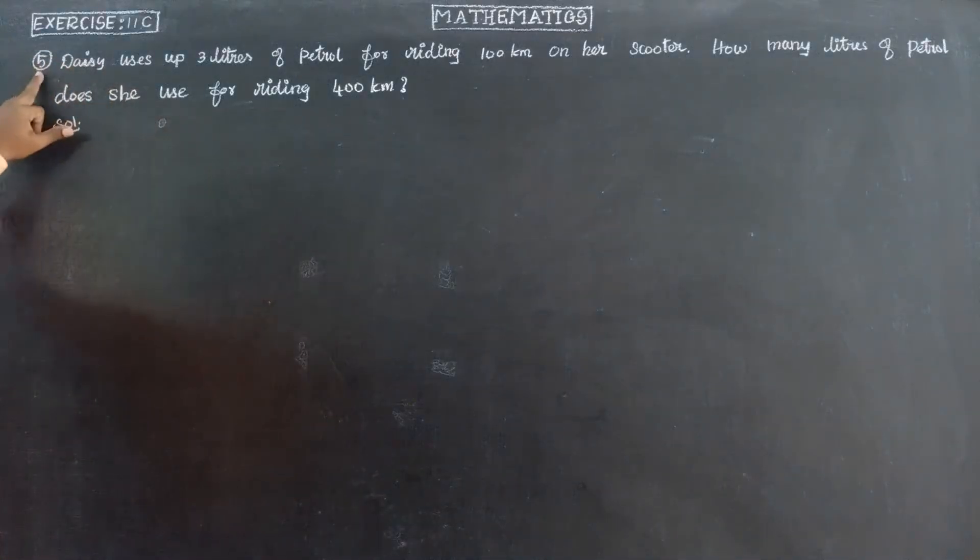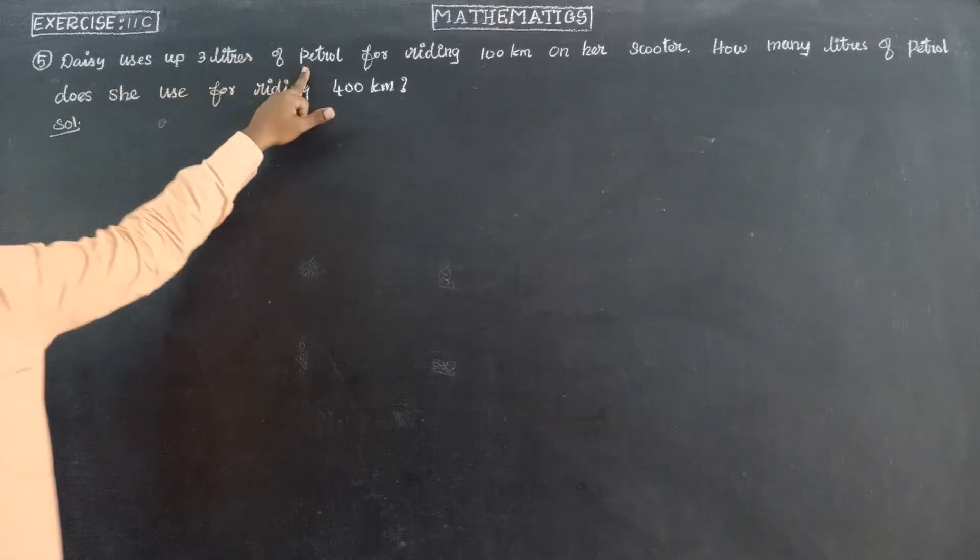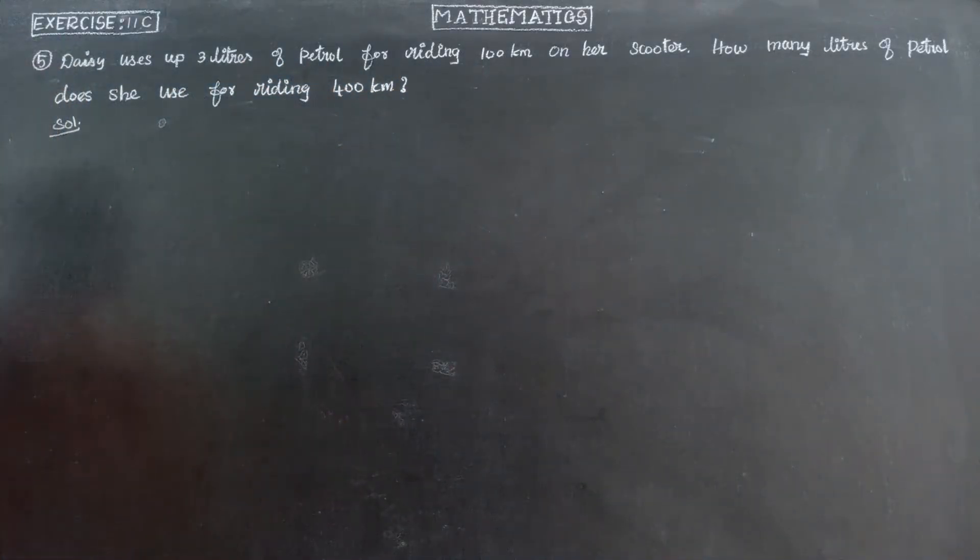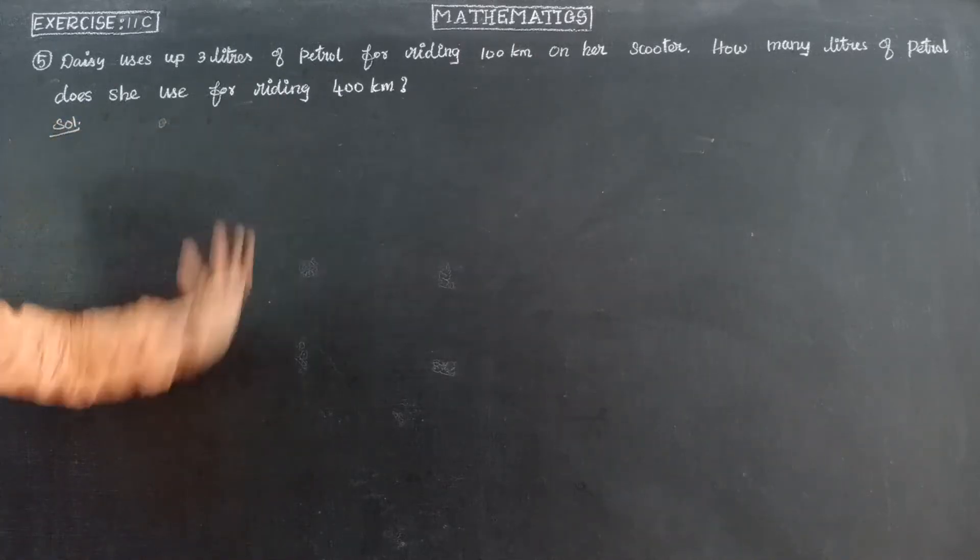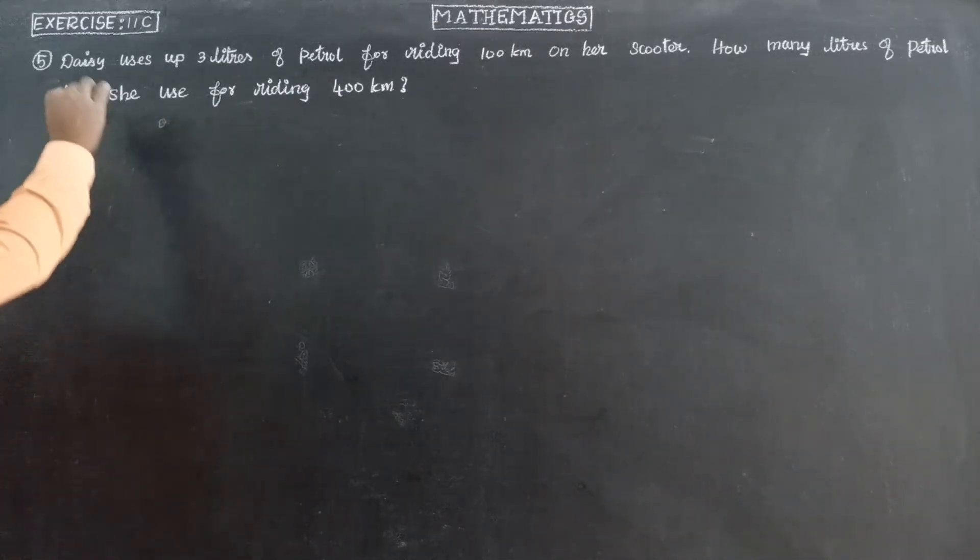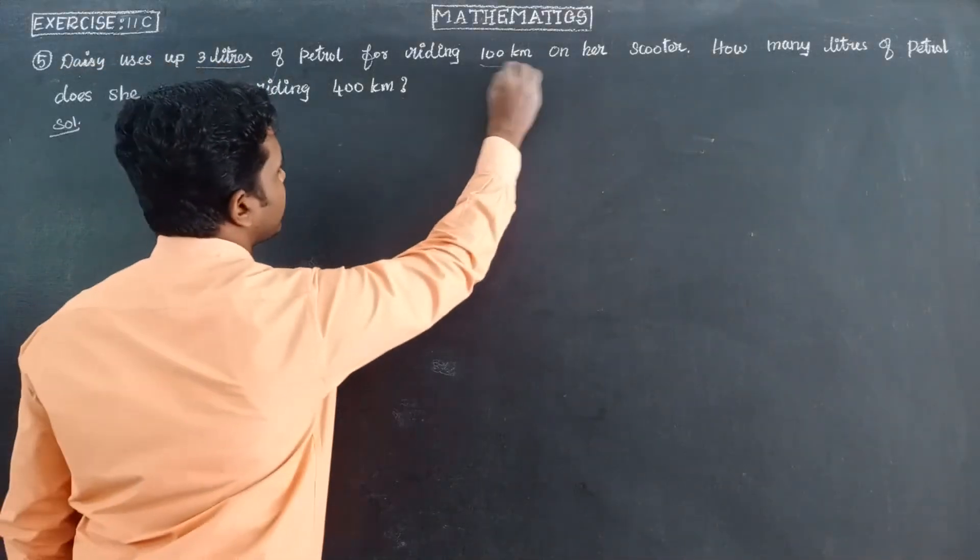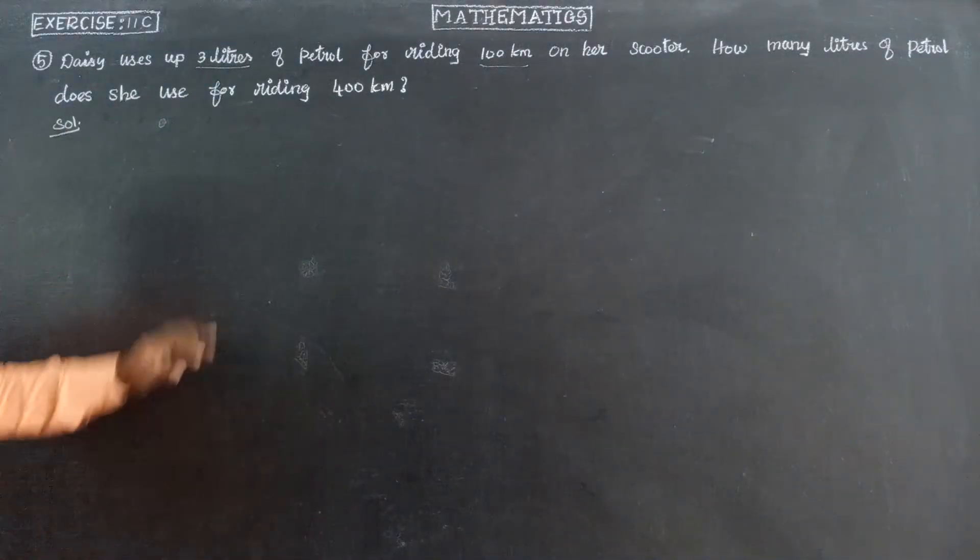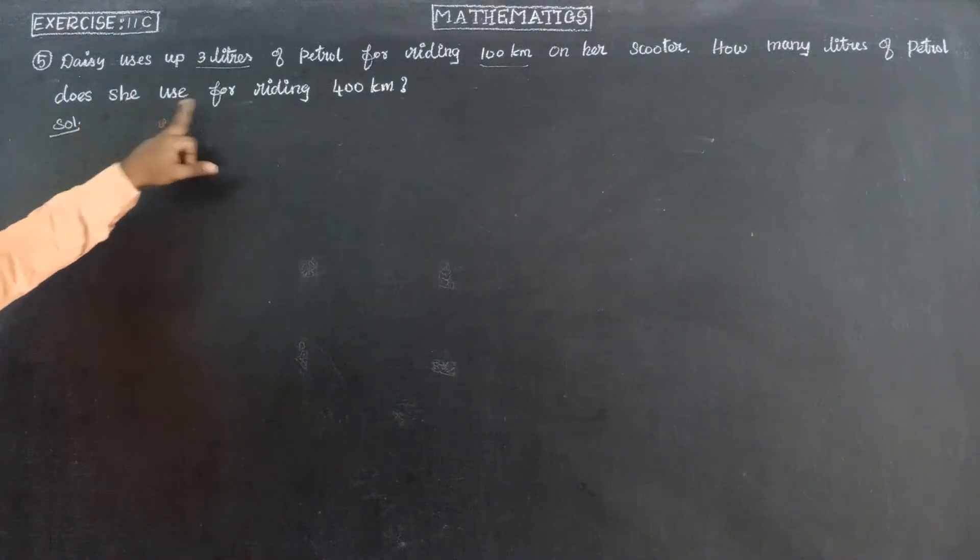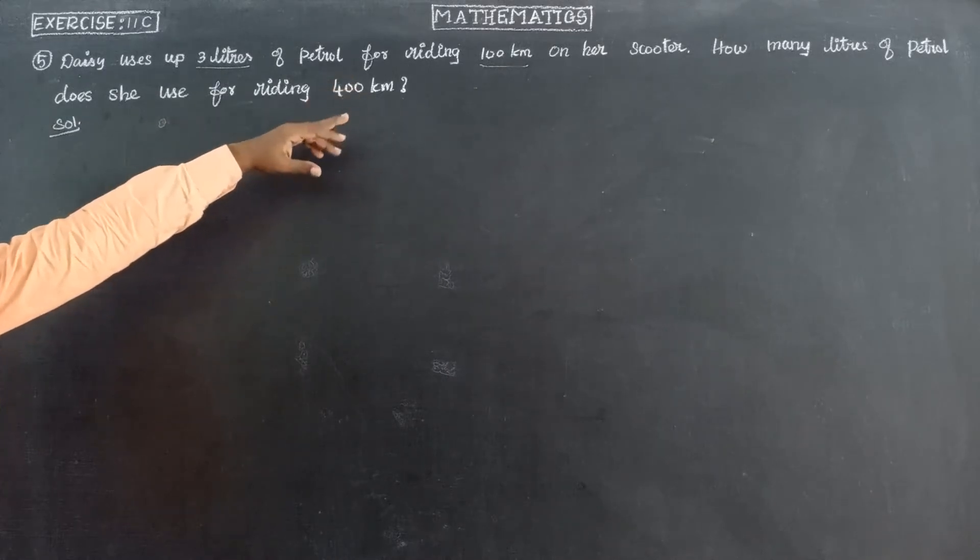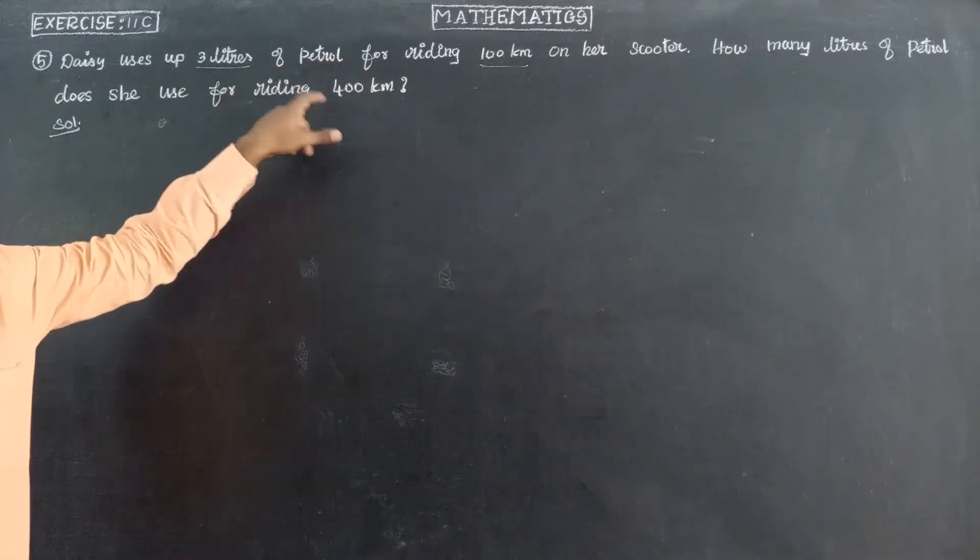Next Exercise 11C Question number 5. Daisy uses 3 litres of petrol for riding 100 km on her scooter. How many litres of petrol does she use for riding 400 km? So the question is how many litres of petrol is required to cover 400 km?